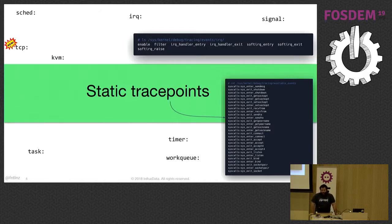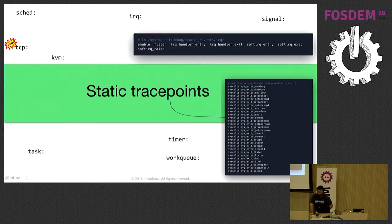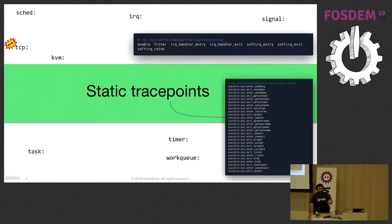One of those tracing frameworks provided by the kernel is static tracepoints. Static tracepoints are trace points fixed in the kernel that are already there for you to use. They are defined — there's a folder where you can see all the static tracepoints defined on your machine by printing a file. Those have been defined by the kernel developers, so they're already there, with their arguments and return values, and you can extract information from them.